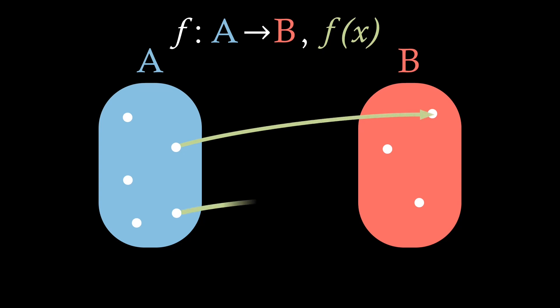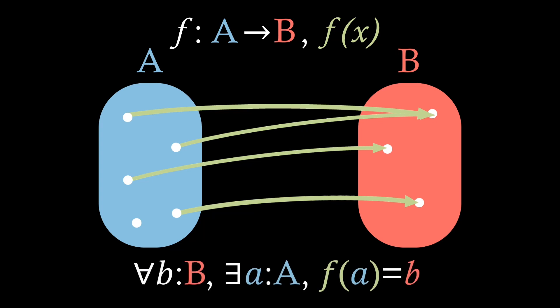If we imagine our function rule mapping from our domain to our codomain, where every point in our codomain is mapped to by some value in our domain, which can be written as: For all little b in our codomain, there exists a little a in our domain, such that f of little a equals little b. If this is the case, we say our function is surjective.